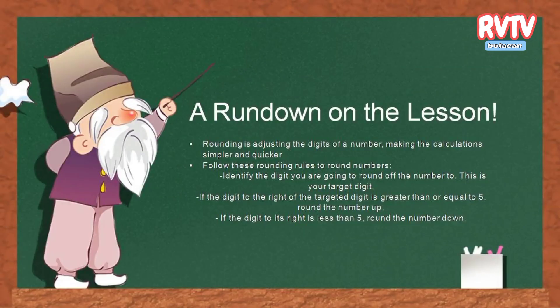To round down on the lesson: rounding is adjusting the digits of a number, making the calculations simpler and quicker. Identify the digit that you are going to round off — the number 2 is your target digit. If the digit to the right of the targeted digit is greater than or equal to 5, round the number up. If the digit to its right is less than 5, round the number down.